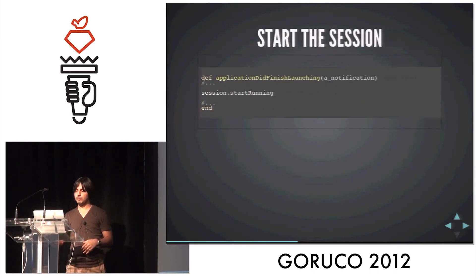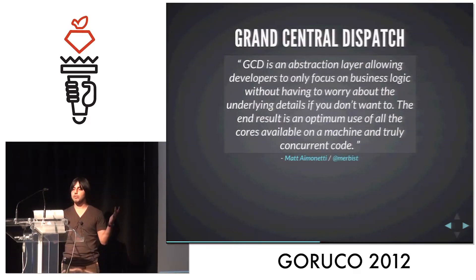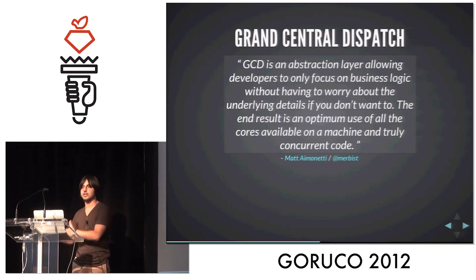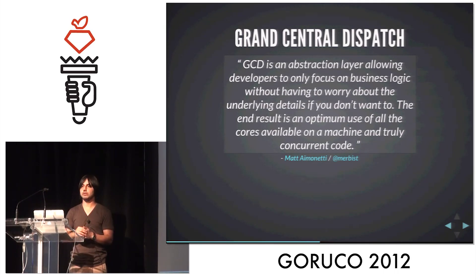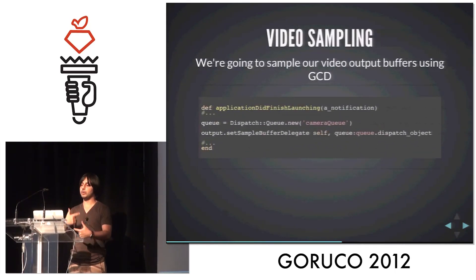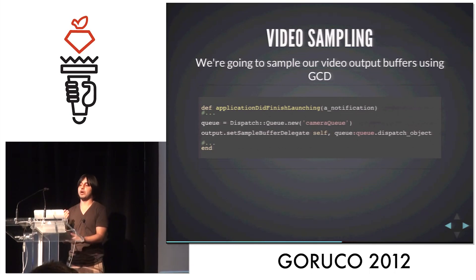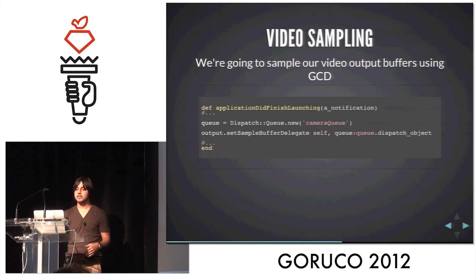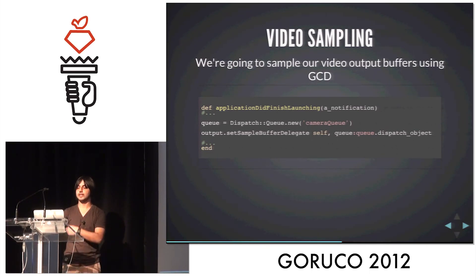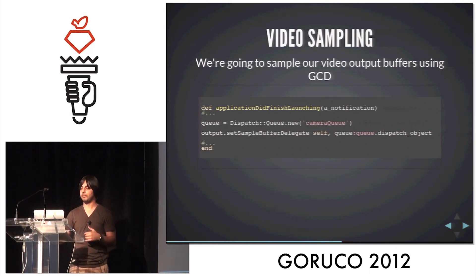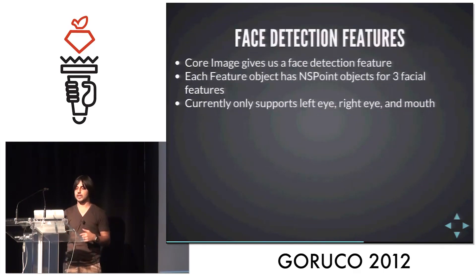We're going to start the session, and then we have a session going. Now we're going to use Grand Central Dispatch, which is this awesome library that Cocoa gives you for basically queuing stuff. We're going to use it in a very light way — we're going to sample the video output buffers using GCD, and it's very simple. They've matched the APIs really, really well. So we create a new dispatch queue, call it the camera queue, and then set the delegate — which is responsible for knowing what's going on — to our app delegate class.